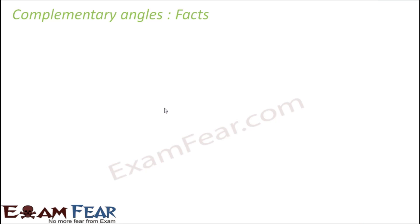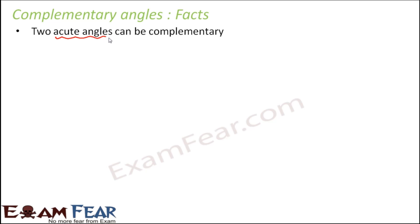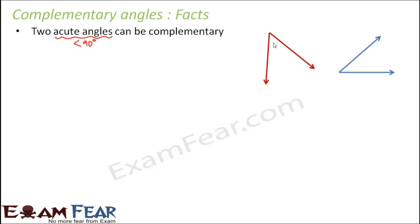Now let us look at some facts with regards to complementary and supplementary angles. Starting with complementary angles: do you think that two acute angles can be complementary? First, what are acute angles? Those angles whose value is less than 90 degrees. So, let us say you have two acute angles — one is 50 degrees and another is 40 degrees. When you sum them up, it is 90 degrees. These two together make 90 degrees. Therefore, these two are definitely complementary. Yes, two acute angles can be complementary.